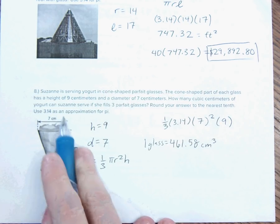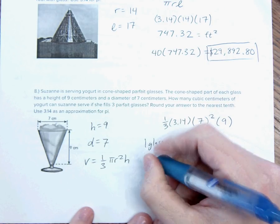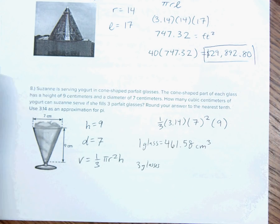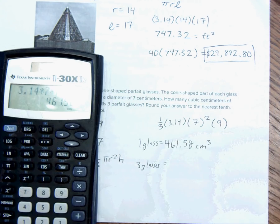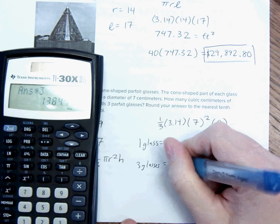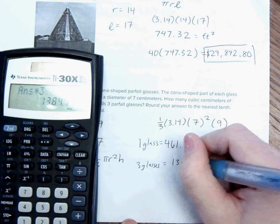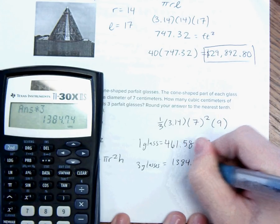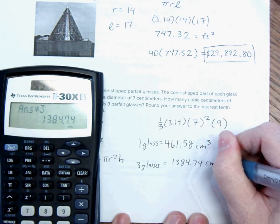I want to, Susanne is serving three. So, if we're going to do three glasses, we take this number and we multiply it by 3. And I get 1,384.74 centimeters cubed.